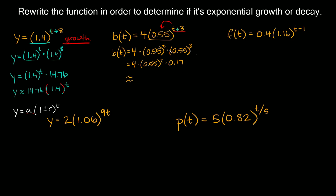Simplifying further: 4 × 0.17 ≈ 0.67, so we get b(t) ≈ 0.67 × 0.55^t. Now t is by itself, and the value inside the parentheses, 0.55, is less than 1 — so this is exponential decay.